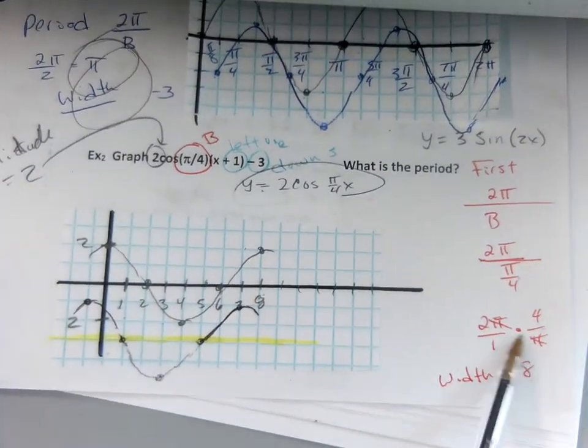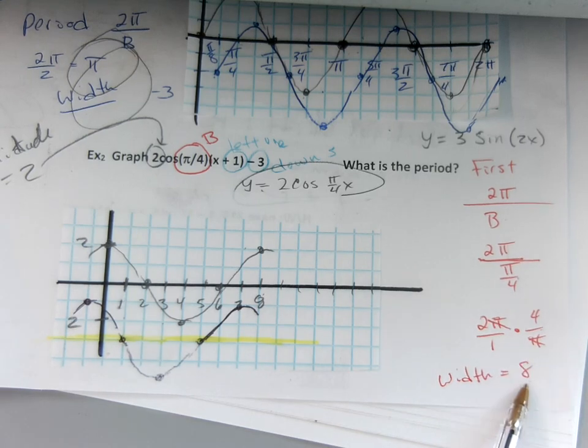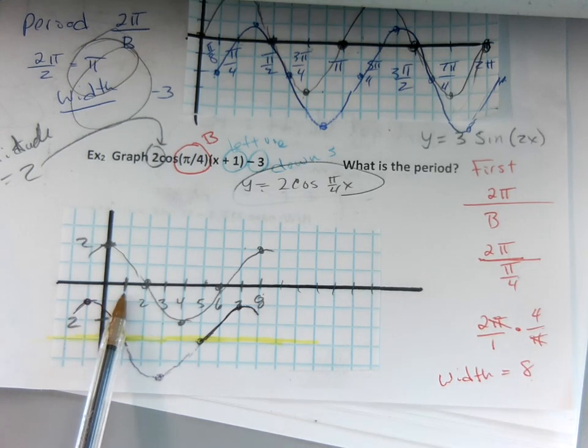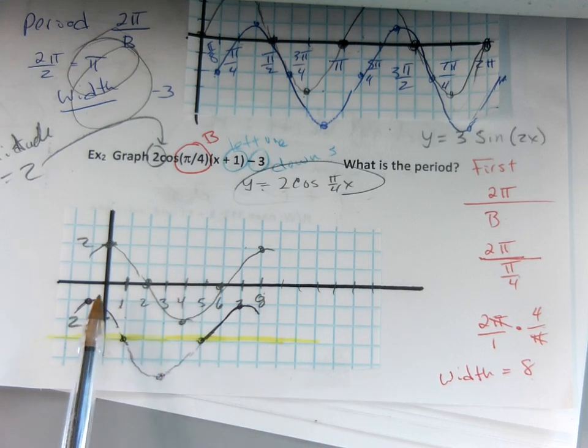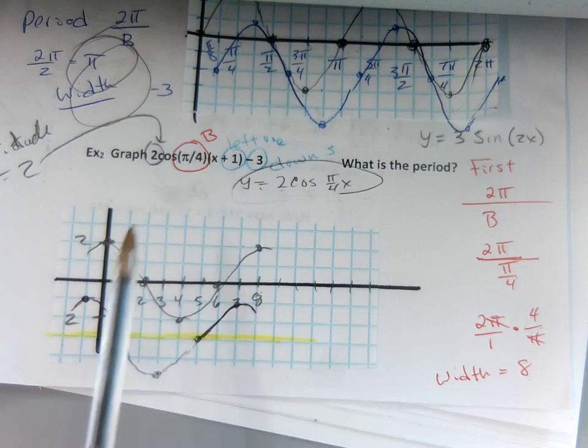Here's my work. So 2π divided by b, π/4, inverted and multiply, and I got 8. So I did my axes, 1, 2, 3, 4, 5, 6, 7, 8. And I drew a cosine curve in from 2 to negative 2 because that's my amplitude.